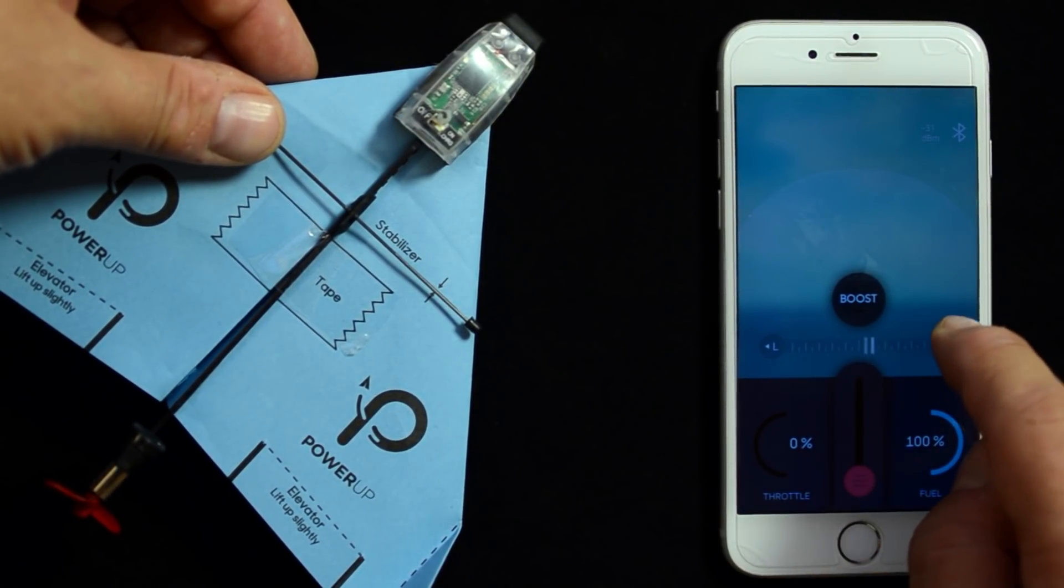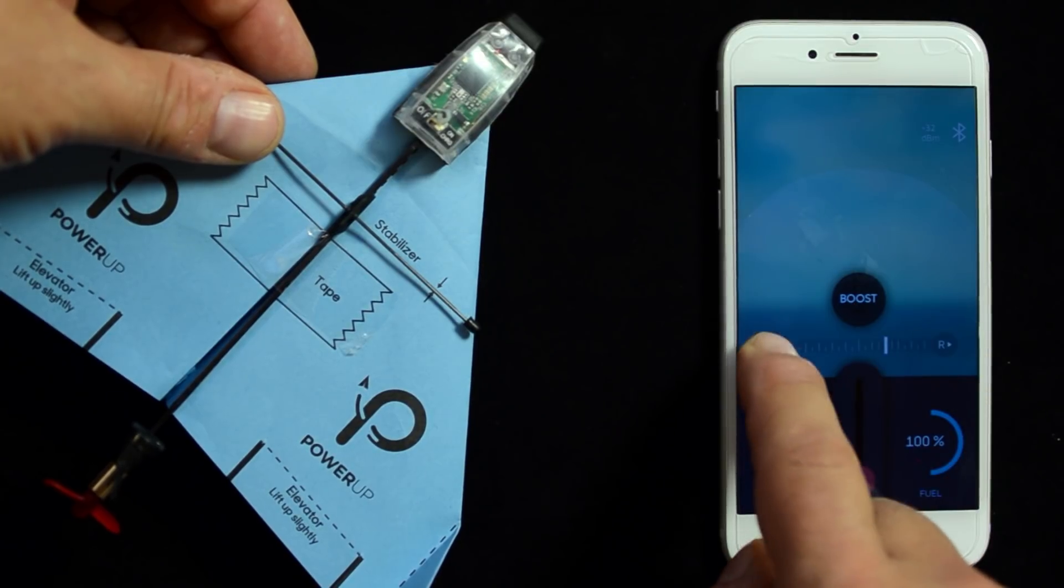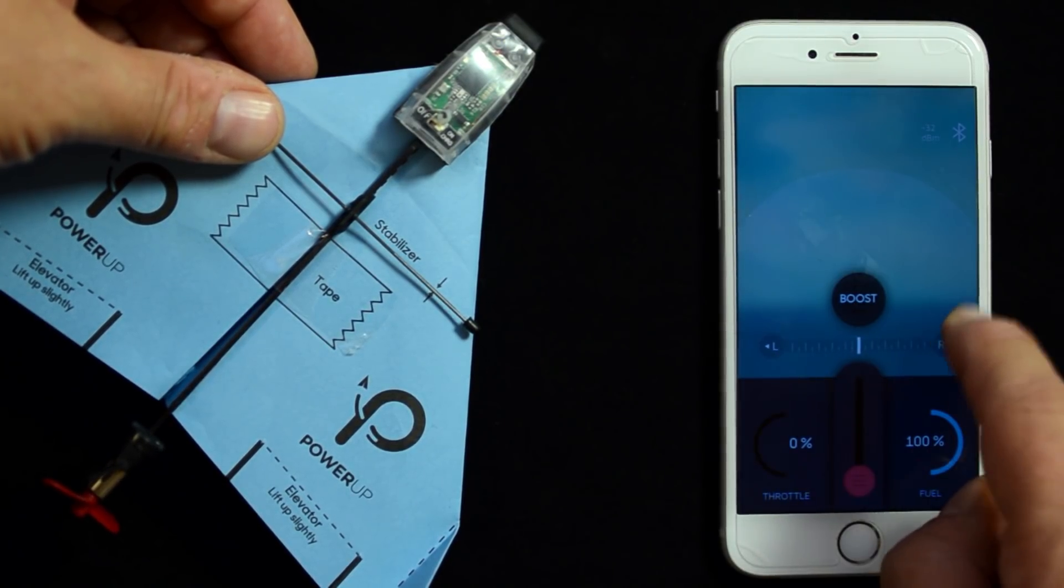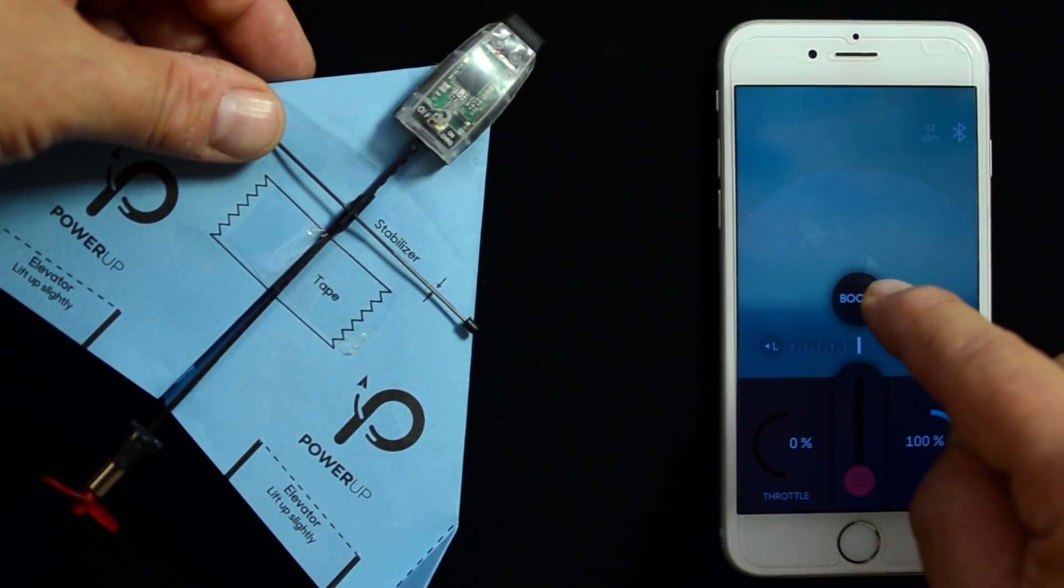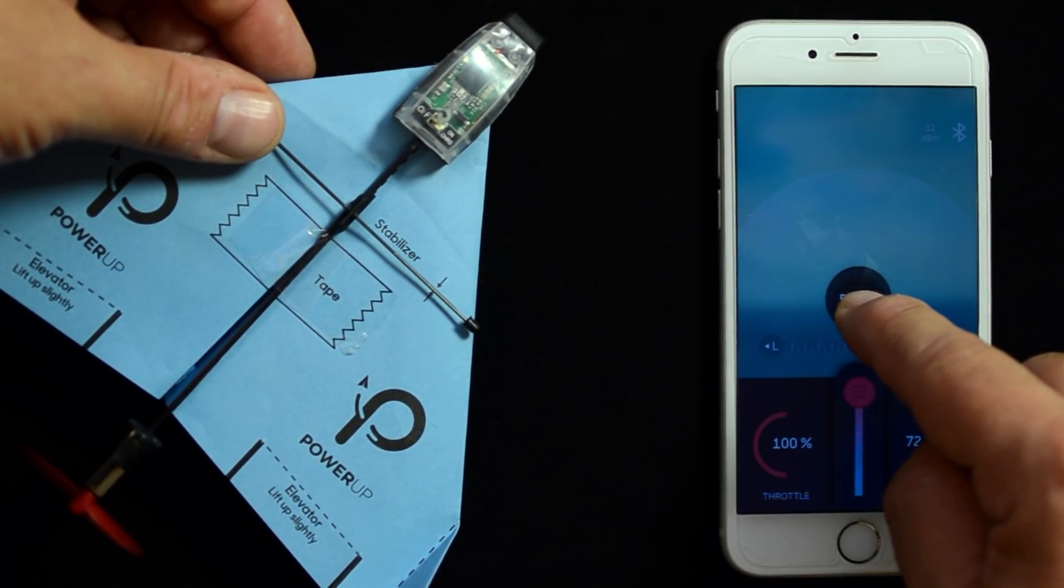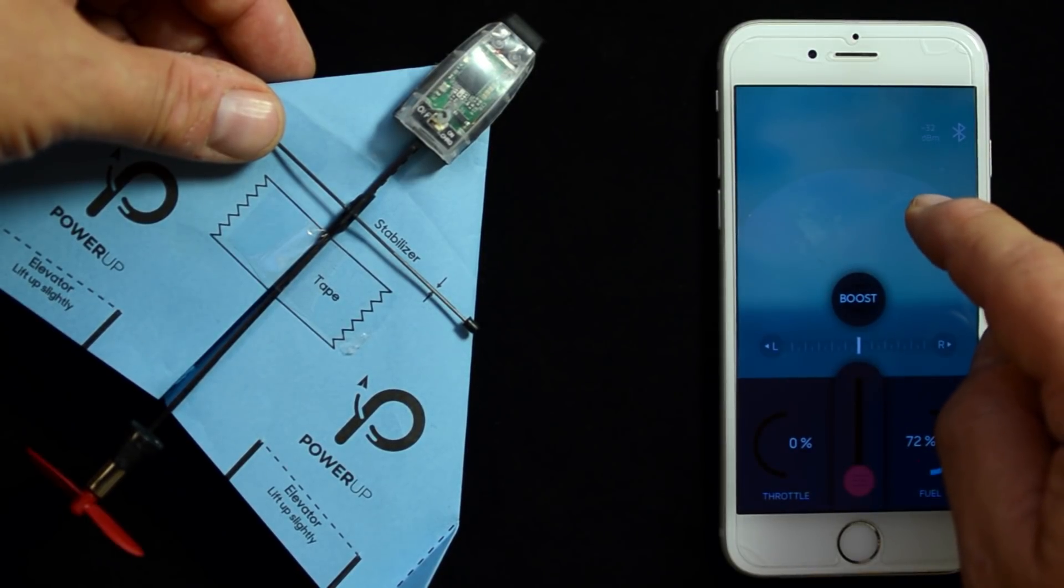the right trim or left trim button. To boost, just press the boost button and you'll get maximum thrust. And always double-tap when you finish.